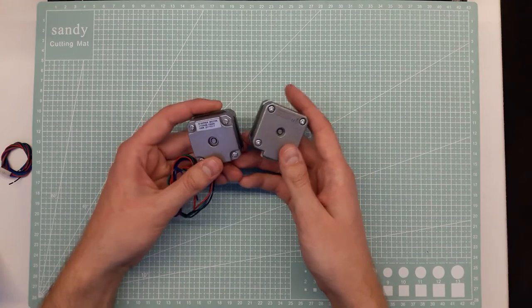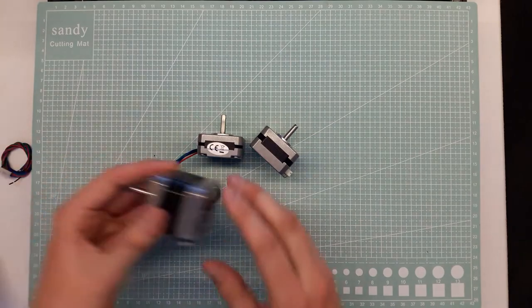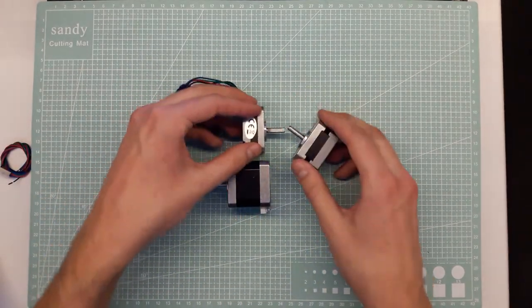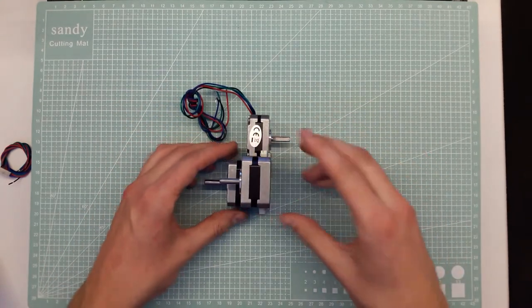As you might have seen I'm using the Folger Tech 2020 and that usually comes with one of these standard size NEMA 17 motors for the extruder. But as you can see it's double the size of these guys.